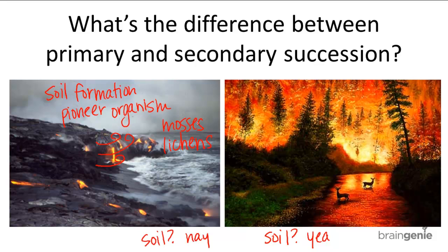These pioneer organisms, particularly lichen, have a special feature that helps the process of soil formation. Lichens are able to secrete toxins into the rocks and break them down into soil. This is one of the first steps of soil formation. Soil formation can also occur over time through the wearing down of rocks by weather and by water. The third type of soil formation is when the mosses and lichens die and their biomass degrades into soil. These are the three different things that contribute to soil formation.